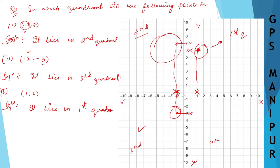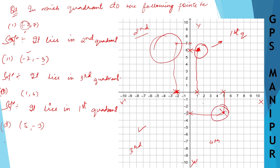Point D is (5, -3). So 5 is for x, it is here, and minus 3 is for y, it is here. This is the point where these two meet, and this point lies in the fourth quadrant.